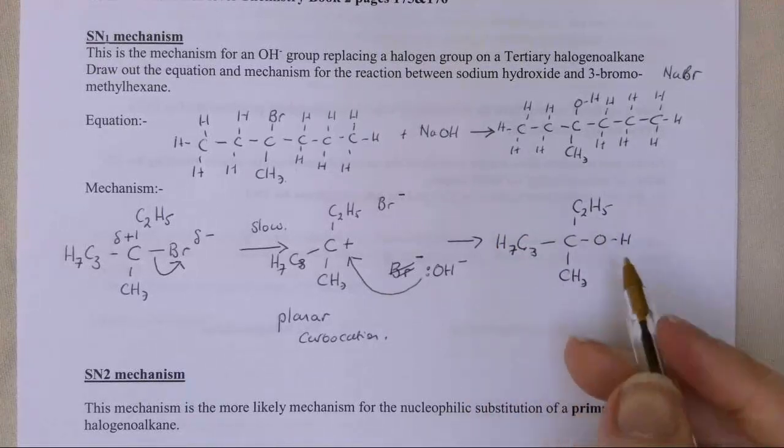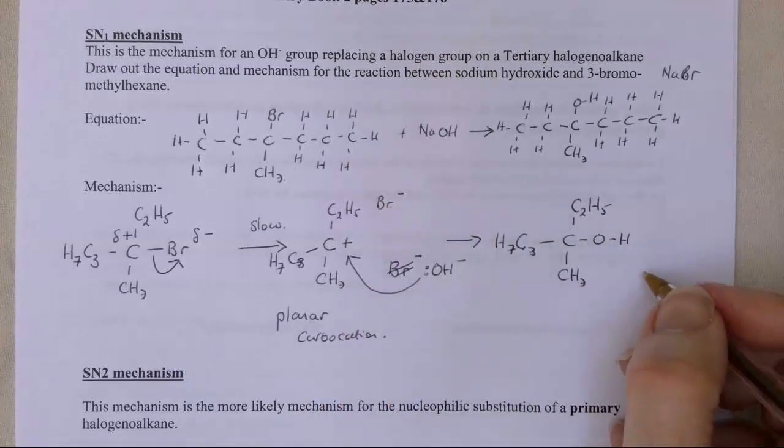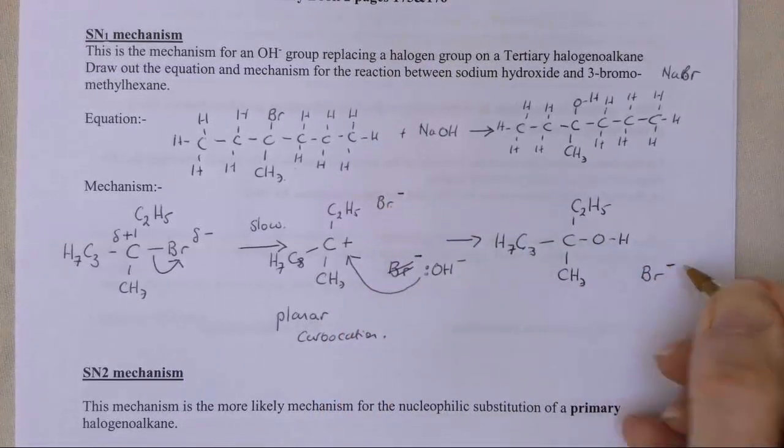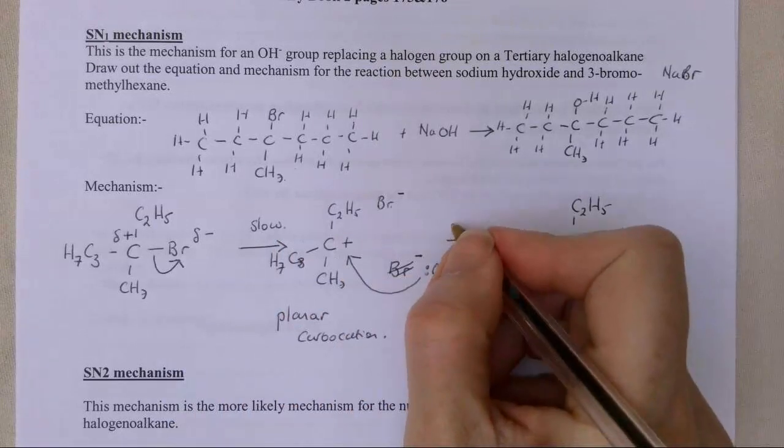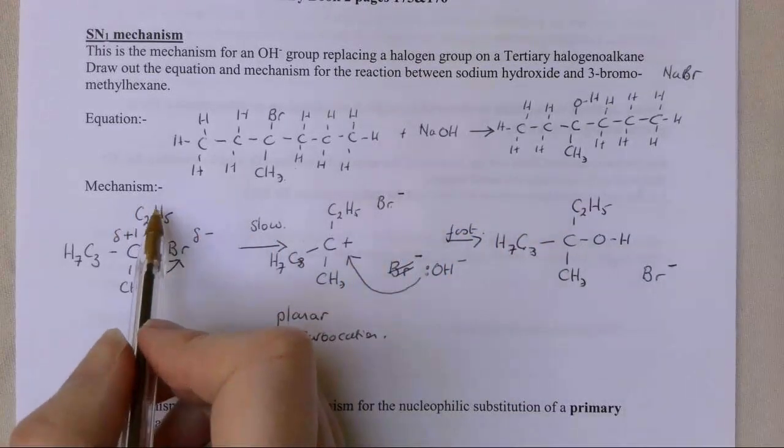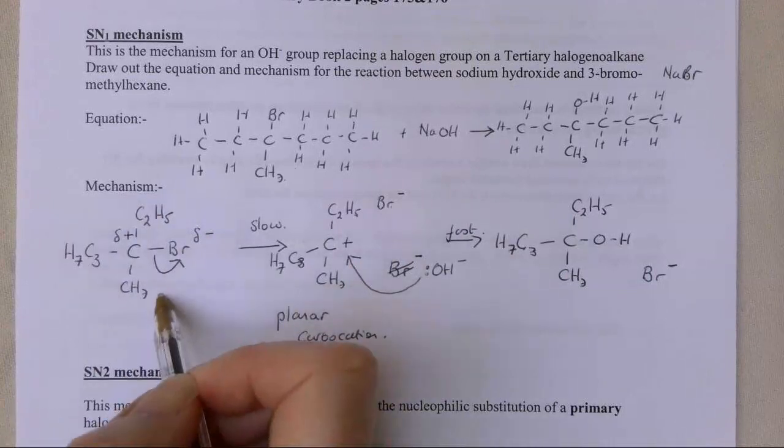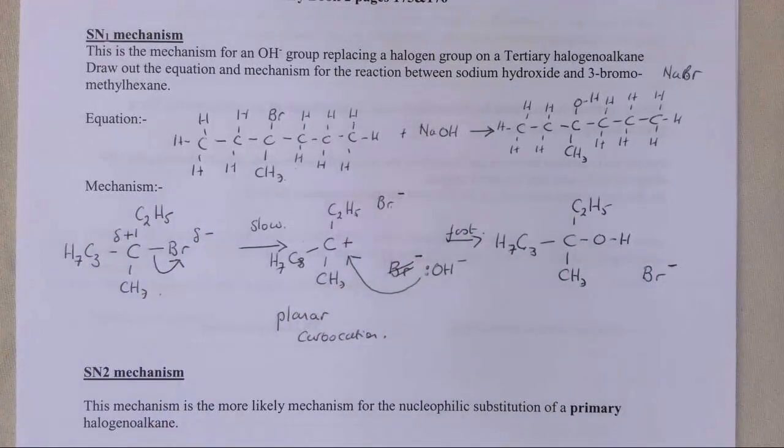So that's my overall mechanism. This is the first step, it's a slow step, and this is a fast second step. It's called an SN1 because there's one species here in this rate determining step, this slow step, which is the first step of this mechanism.